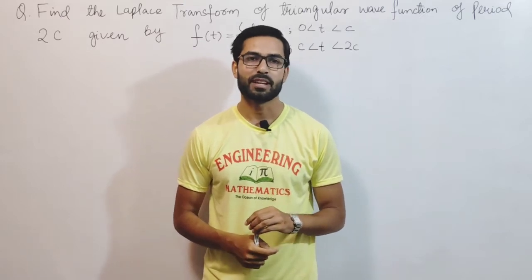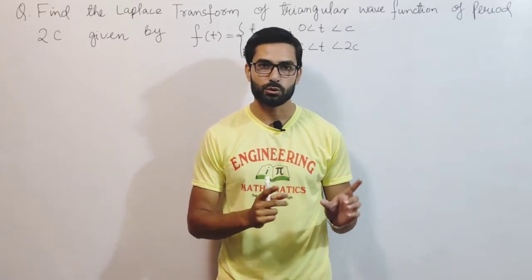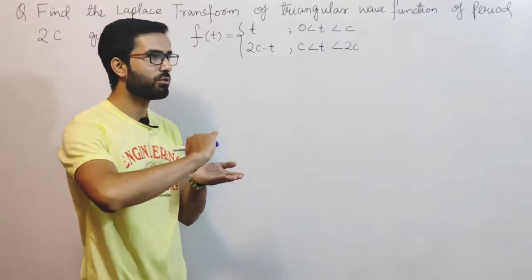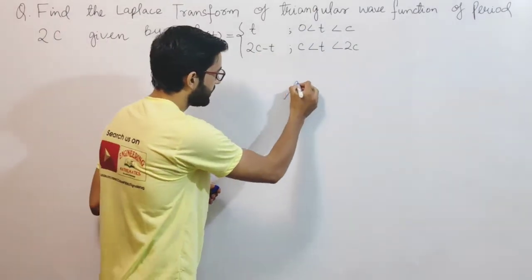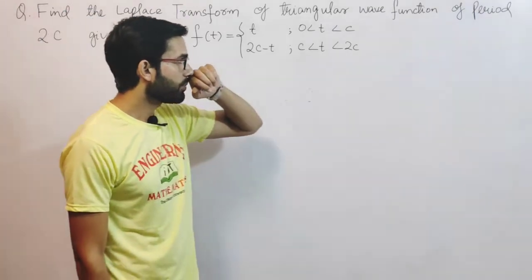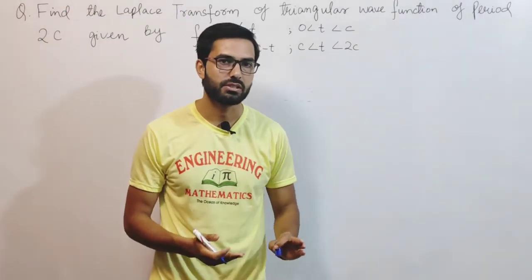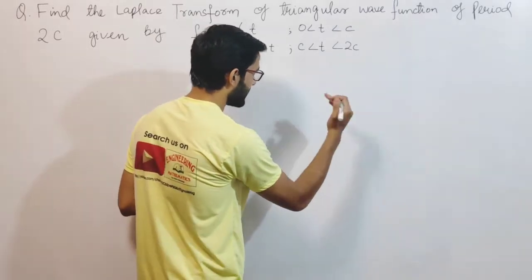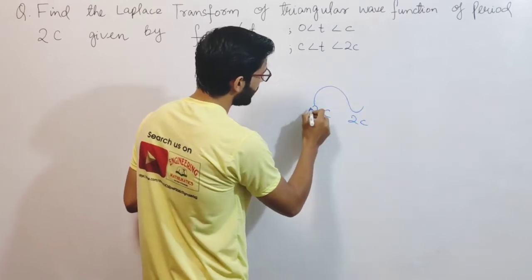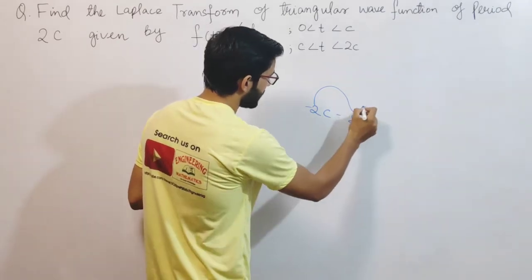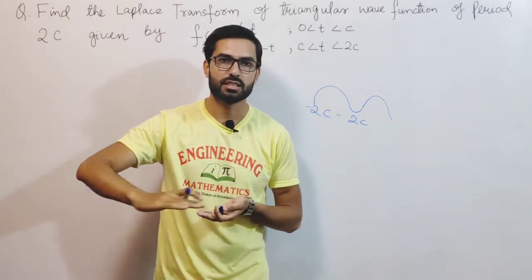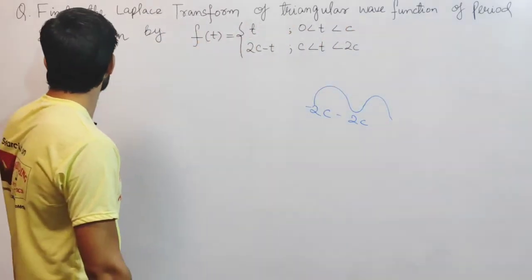Hello students, welcome to Engineering Mathematics. Today I am solving a core question on Laplace transformation of a periodic function. We need to find the Laplace transformation of a triangular wave function — a special kind of wave that propagates in the form of triangles. It has a period of 2c, meaning the function completes one full cycle every 2c units, and this pattern repeats consistently throughout.